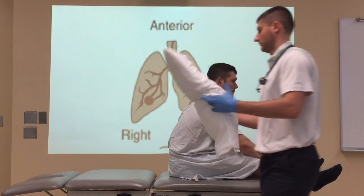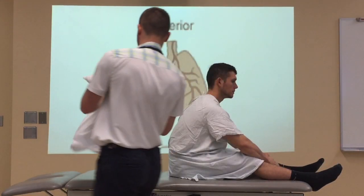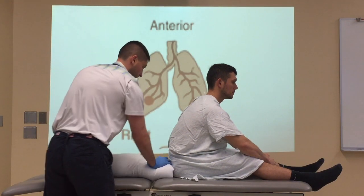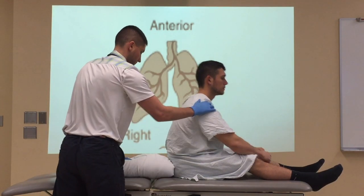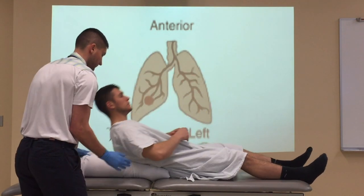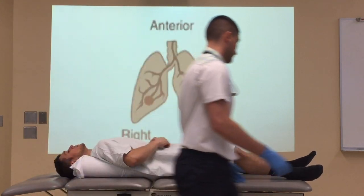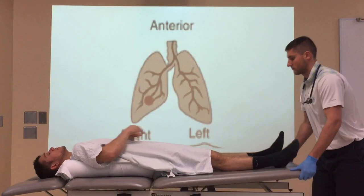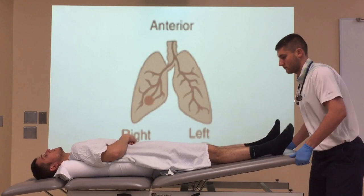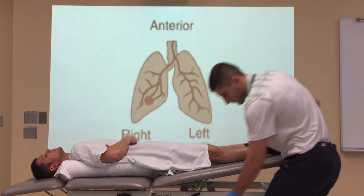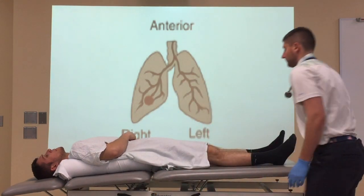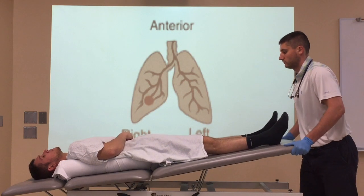For the right middle lobe, your patient should be positioned supine with pillows propping up the right side of the trunk. The table should be positioned in 12 inches of Trendelenburg. All Trendelenburg positions have their own set of contraindications and precautions which clinicians should be aware of before placing their patients in.